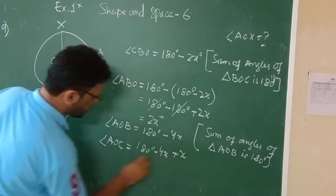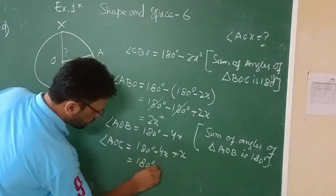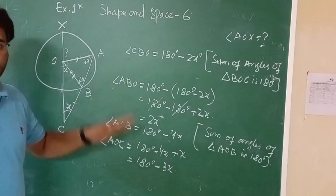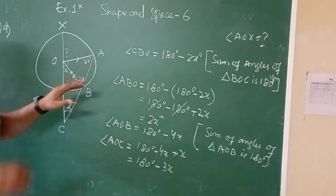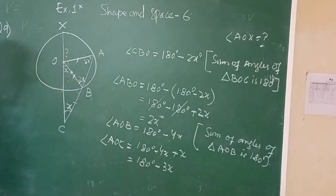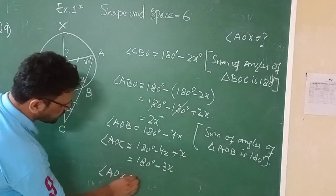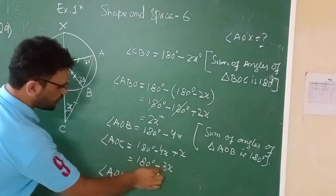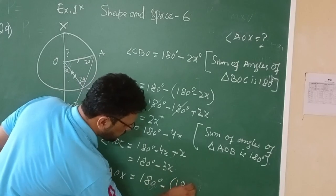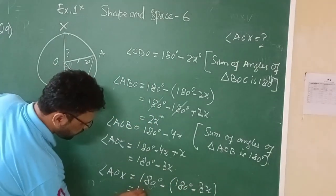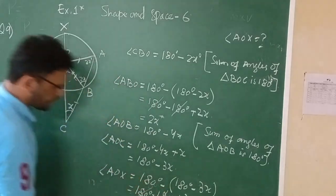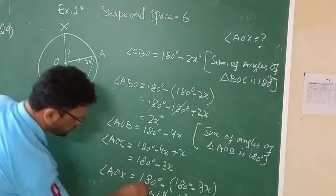So angle AOB plus x equals 180 degrees minus 4x plus x, which equals 180 minus 3x. From the figure, angle AOX and angle AOC lie on the same straight line, so their sum is 180 degrees. Therefore angle AOX equals 180 degrees minus angle AOC, which is 180 minus (180 minus 3x), and the answer is 3x.